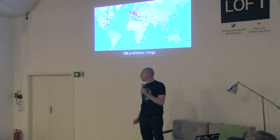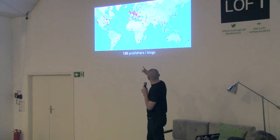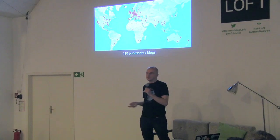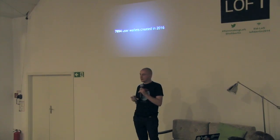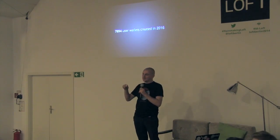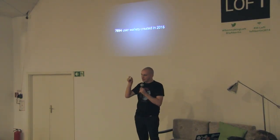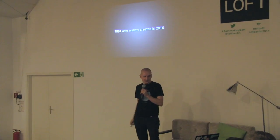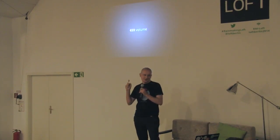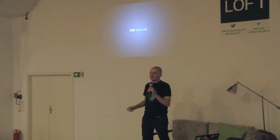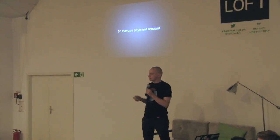Let's look at some traction. We have 120 publishers from around the world — this map shows the distribution of where our users are from. These are small blogs, people that signed up and use it to test around a bit. To be honest, there's no power user there, but it's good to get some technical validation. Roughly 8,000 user wallets have been created since the beginning of the year — the trick is that because there's no onboarding process, when you see our little widget in the bottom right, you already have a wallet, which is why this number seems quite high. Roughly 1,600 purchases were handled with our system and a whopping 69 euros in volume. It gives us the knowledge that this works — technical validation is there, and to some extent also market validation that this stuff can work.